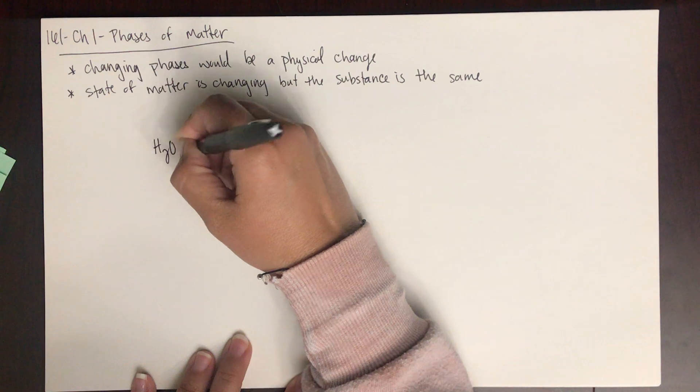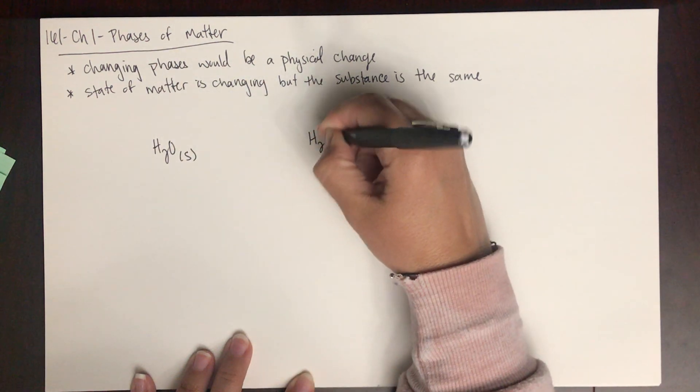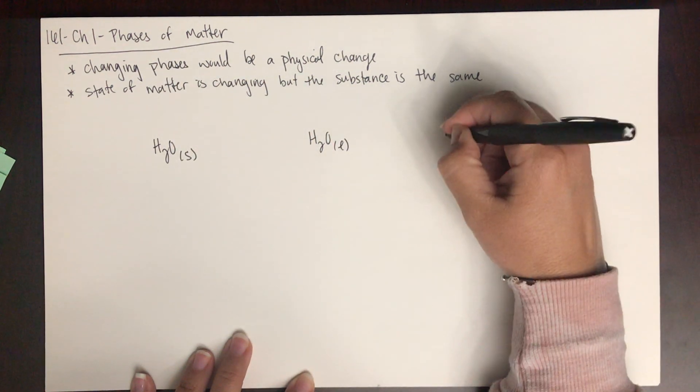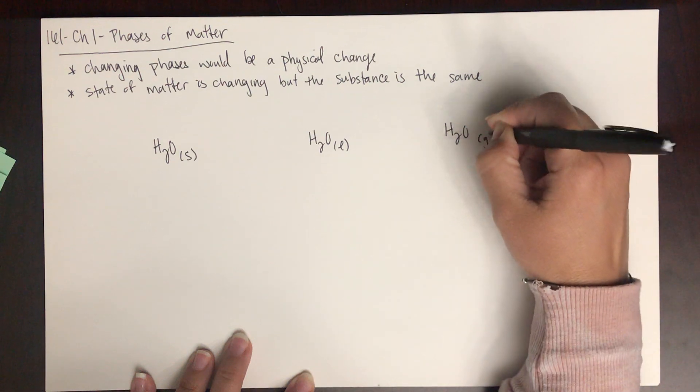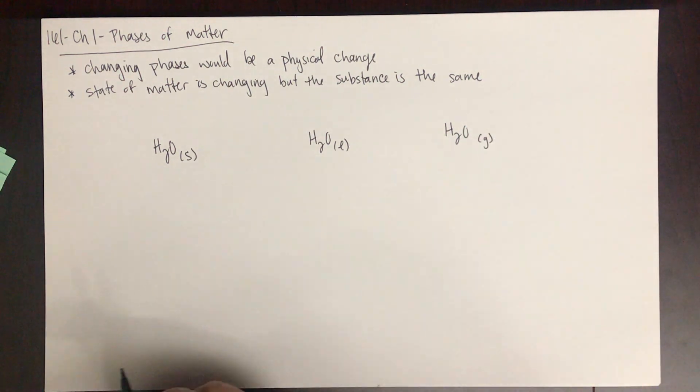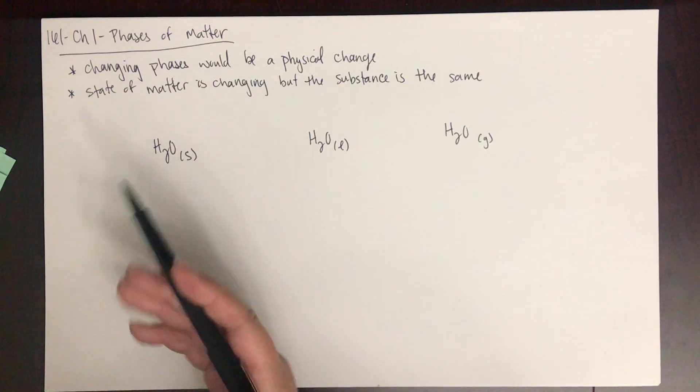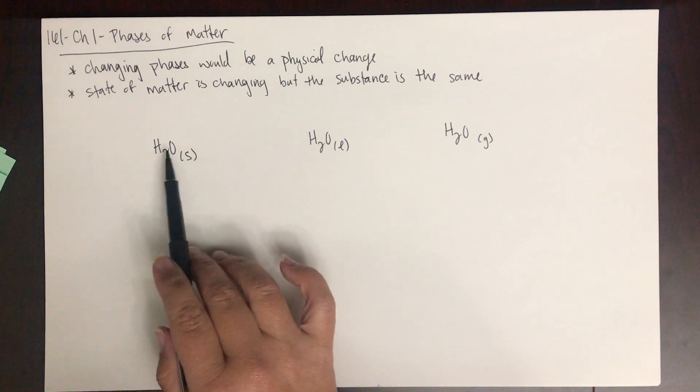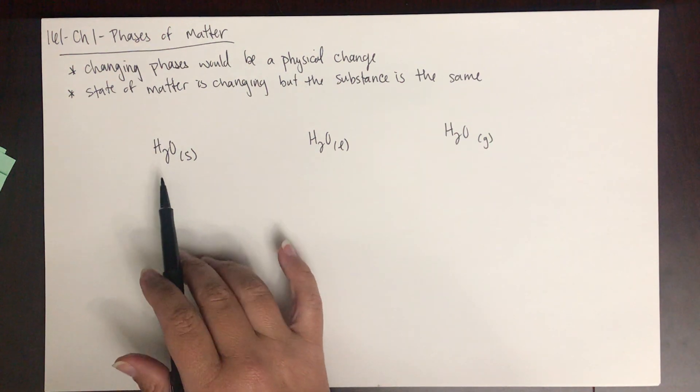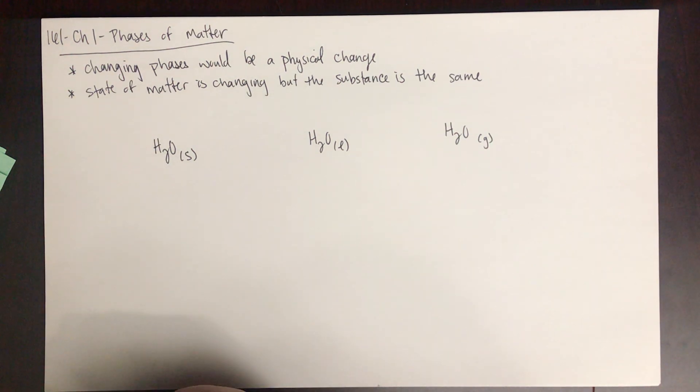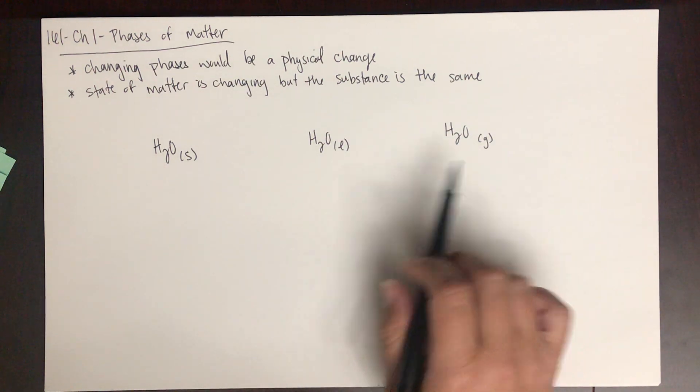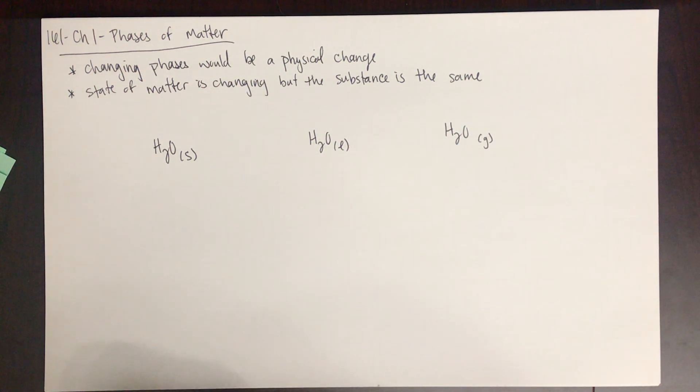I have H2O solid, H2O liquid, and H2O gas. Remember we identified the different classes of matter. H2O, water, is a compound because it's made up of two or more elements. It's a pure substance with two hydrogens and one oxygen. These are the same substances even though they are in different phases of matter.